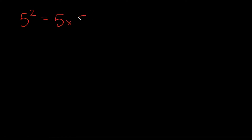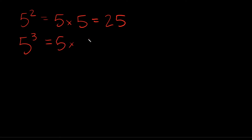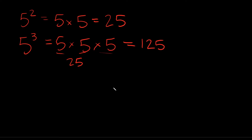Just a couple easy examples first. If we had 5 squared, or 5 raised to the second power, this is the same thing as 5 times 5, which is just equal to 25. If we had 5 cubed, or 5 raised to the third power — just two different ways of saying it — this would be 5 times 5 times 5. 5 times 5 is 25, and then 25 times this last 5 is 125. That's pretty straightforward.